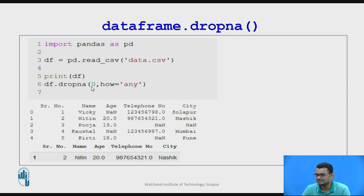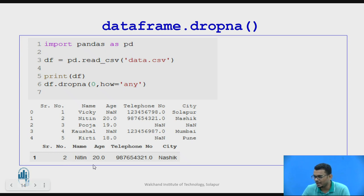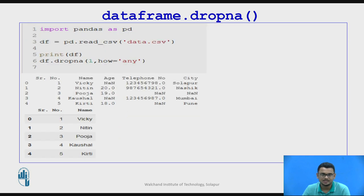When we pass axis=0 and how='any', it gives us output checking across rows, and only the row having all values present in the data is printed — all other rows are dropped. If we change the parameter to axis=1 and keep how='any', it prints all the columns where all the data is present and leaves out all columns where data is missing.